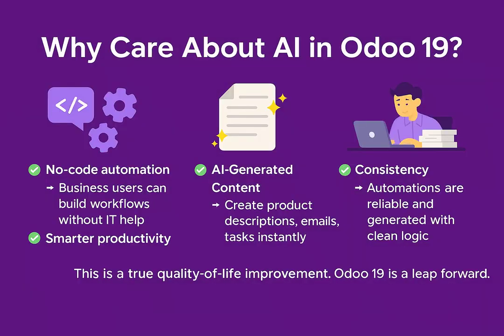So why should you care about AI in Odoo 19? No-code automation — business users can build workflows without IT help. Smarter productivity — AI creates text, reminders and tasks instantly. Time saving — sales teams, accountants and support agents can focus on real work instead of setup. Consistency — automations are reliable and generated with clean logic.